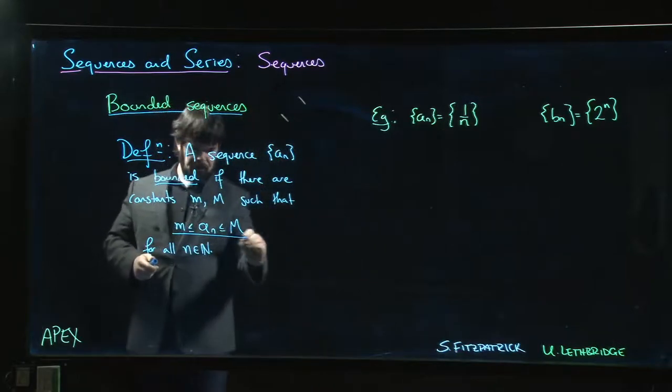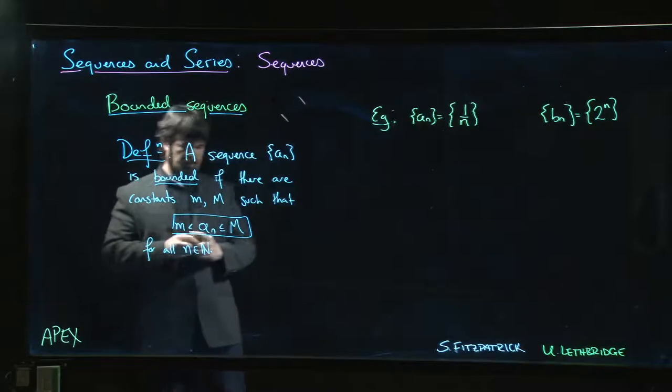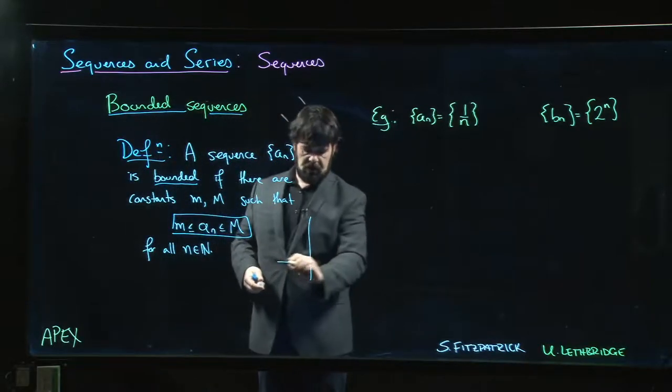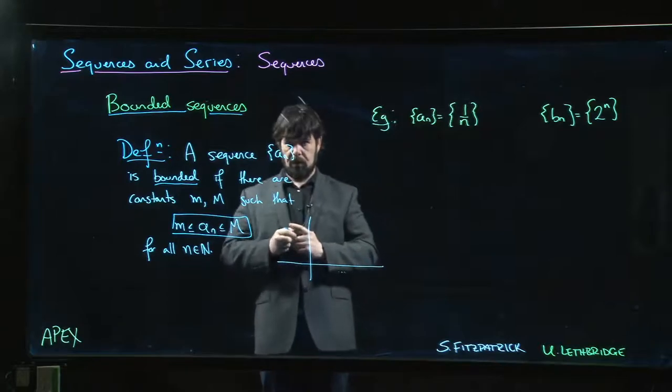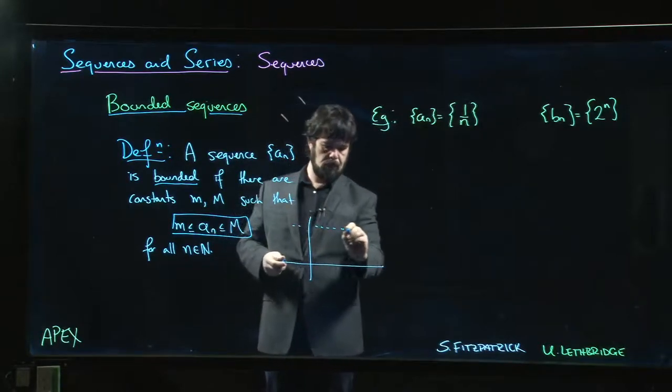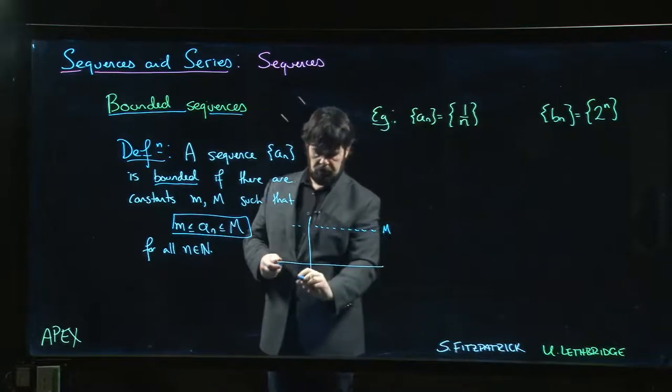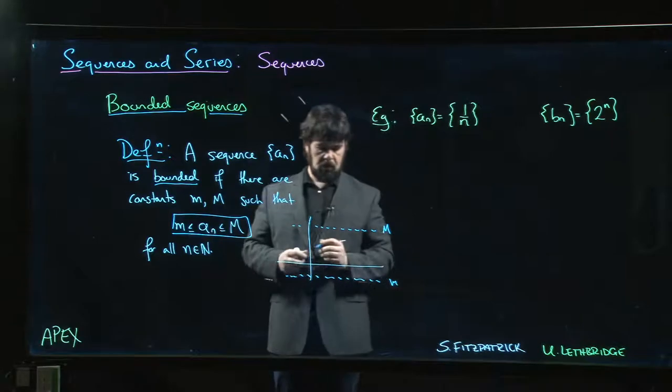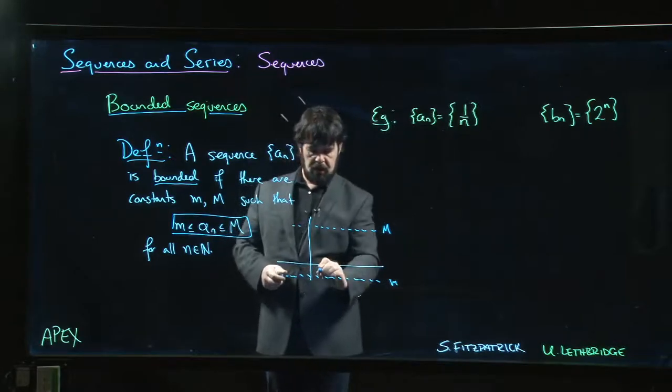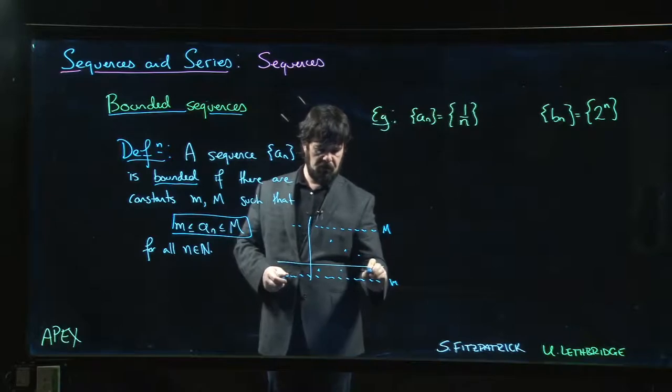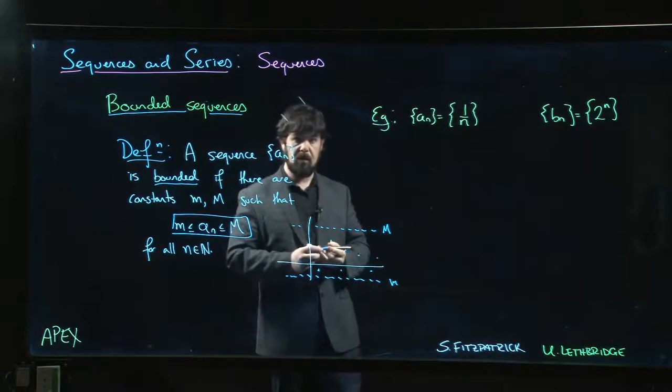Okay, so that's a relatively straightforward definition. Visually you can sort of think about how this looks. If you plot the terms in your sequence, you have some upper bound big M, some lower bound little m, and every term in the sequence has to lie in between those two bounds.